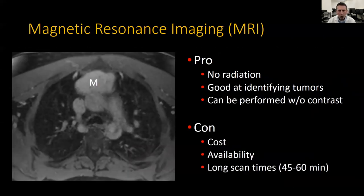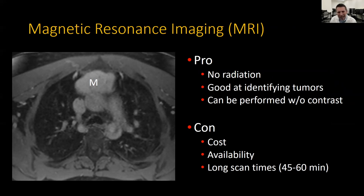We will now move to magnetic resonance imaging, or MRI, which is another way to image thymic tumors. One of the pros of MRI is that there is no radiation used, which is particularly helpful in younger patients or those who will have multiple studies for follow-up. MRI is also very good at tissue characterization — it can more easily tell the difference between tumor, regular body organs, and muscles, even without IV contrast. While IV contrast is helpful in MRI scans, they can still be done without contrast if needed and remain helpful.